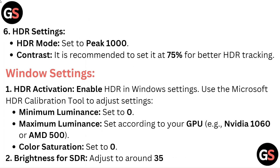Windows Settings – HDR Activation: Enable HDR in Windows Settings and use the Microsoft HDR Calibration Tool to adjust settings. Set Minimum Luminance to 0 and Maximum Luminance according to your GPU, such as NVIDIA 1060 or AMD 500. Set Color Saturation to 0 and Brightness for HDR to around 35.